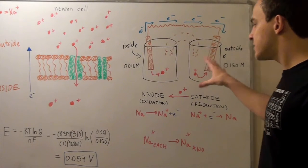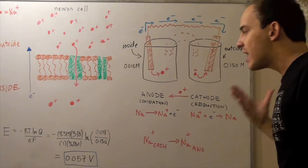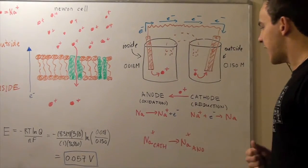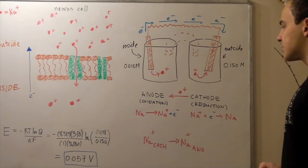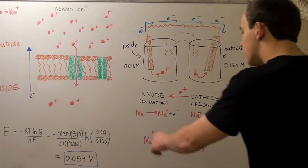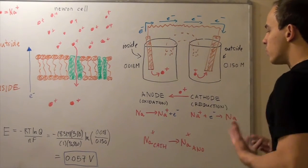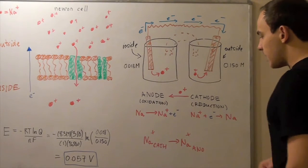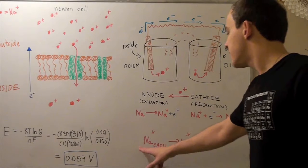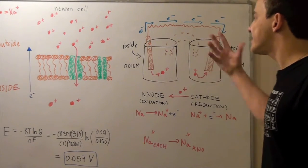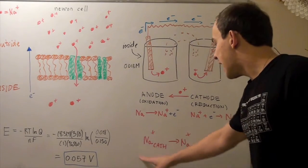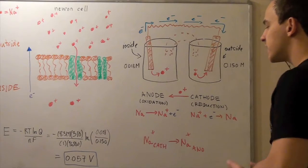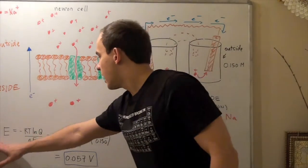We can use this concentration cell setup with the oxidation and reduction reactions to calculate our cell voltage, or resting potential, due to these sodium ions. Here are our oxidation and reduction reactions. We add them to find the net reaction — the electrons cancel out — and we are left with sodium ions at the cathode and sodium ions at the anode, representing a transfer from cathode to anode. Now we recognize that Q for this system is the concentration in the anode over the concentration in the cathode. So let's apply the Nernst equation.